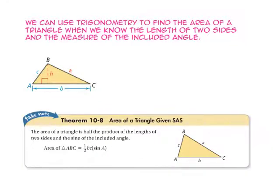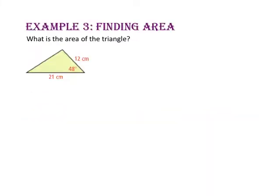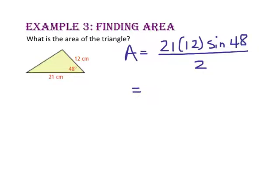We can use trigonometry to find the area of a triangle when we know the length of two sides and the measure of the included angle. Theorem 10-8 gives us the formula for side-angle-side: the area of a triangle is half the product of the lengths of the two sides times the sine of the included angle, or BC times sine of angle A divided by 2. In example 3, what is the area of the triangle? Since we have side-angle-side, we take the product of the two sides — 21 times 12 — times sine of the included angle, divided by 2. That's 187.27 divided by 2, which is approximately 93.6 centimeters squared.